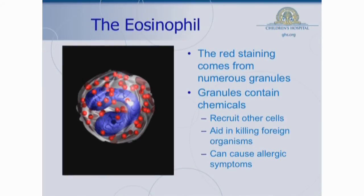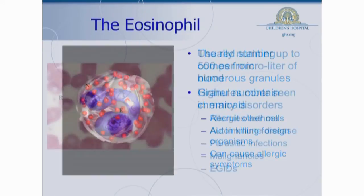Eosinophils are effective at pulling off certain types of organisms, in particular parasites. They also contain chemicals that seem to cause allergic-type reactions, things like histamine.